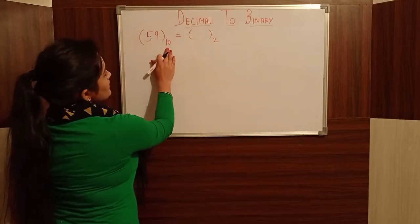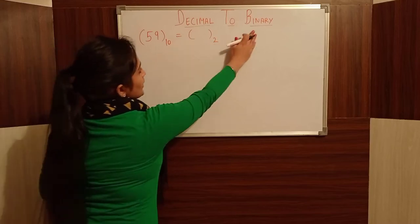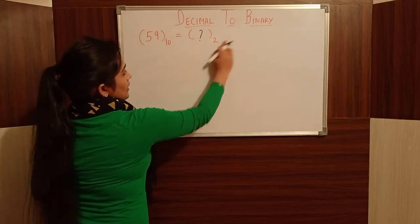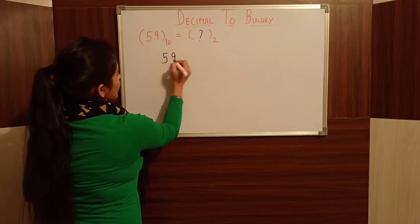59 is the decimal number. Decimal base is 10. Let's convert it to binary. Let's find out the binary number. The binary base is 2. First of all, 59 is the number.